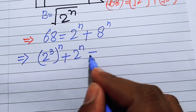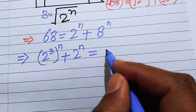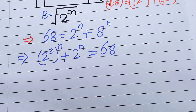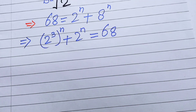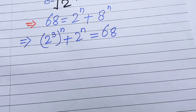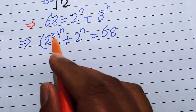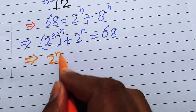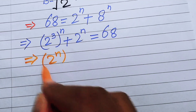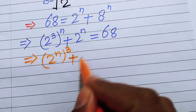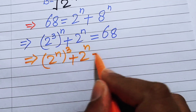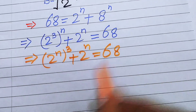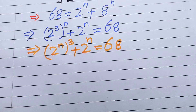We simplify this equation by interchanging the exponents and rewriting 8 to the power of n as 2 to the power of n, whole cubed. So the equation becomes: the cube of 2 to the power of n, plus 2 to the power of n, equals 68.